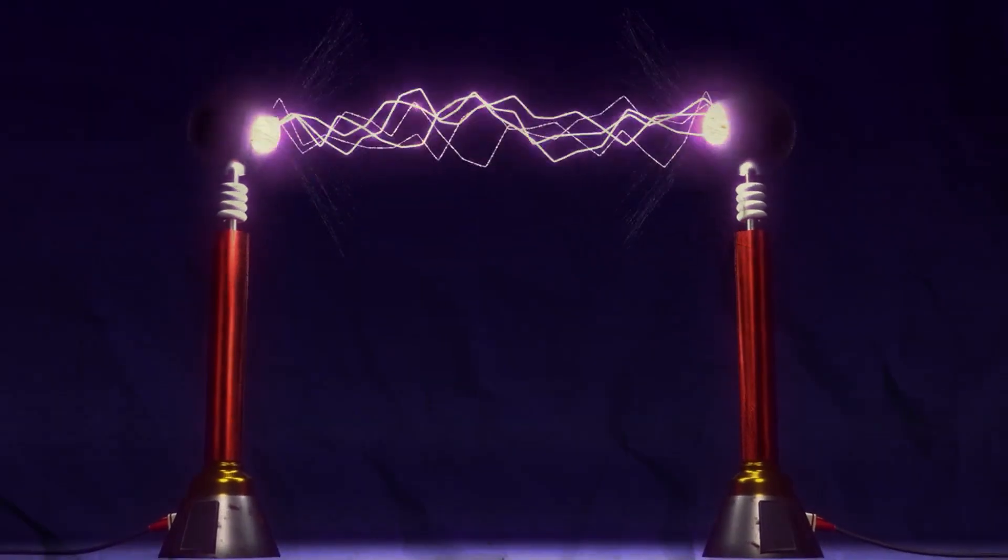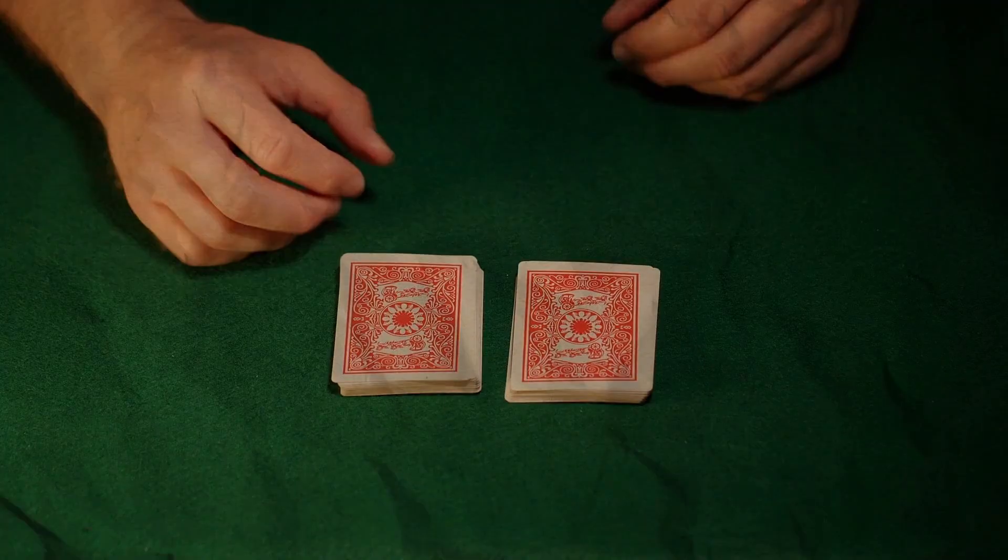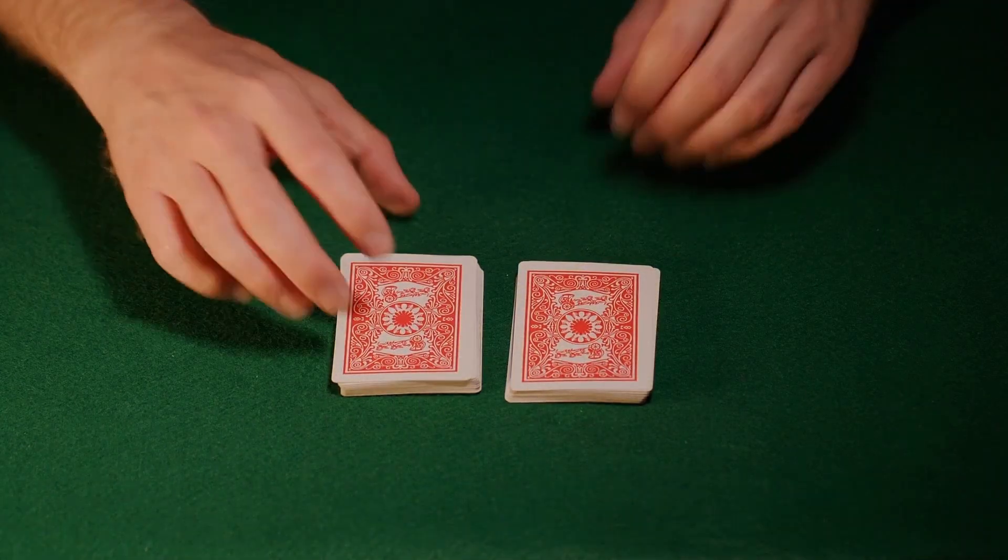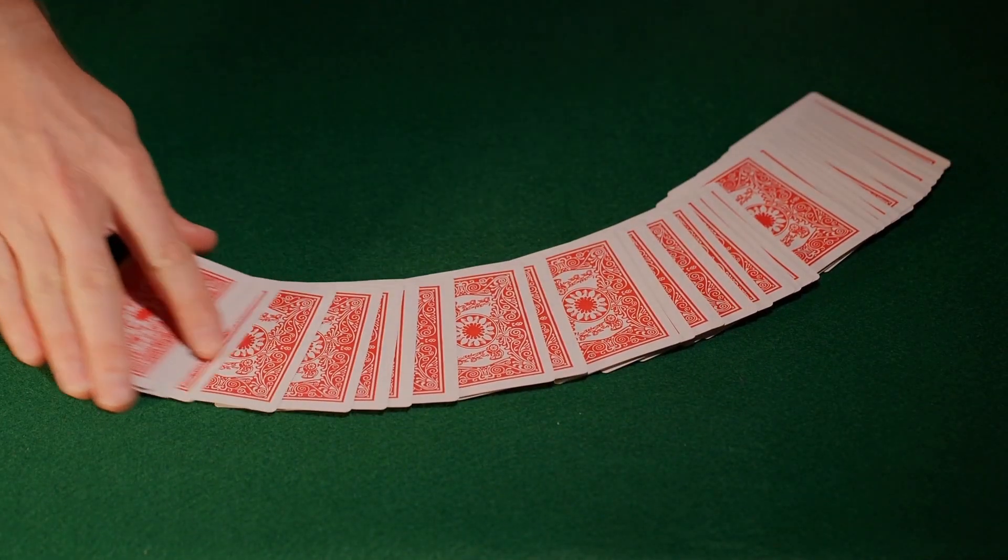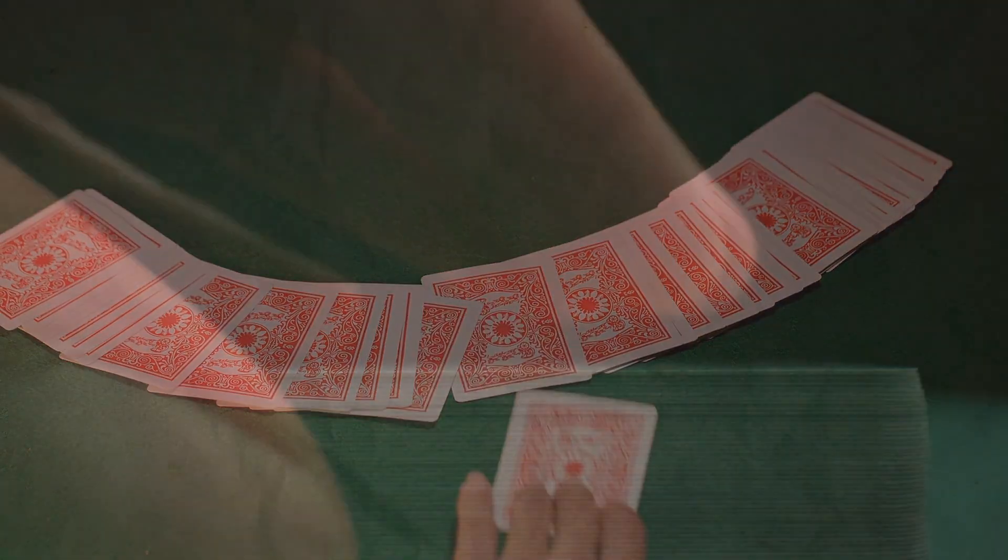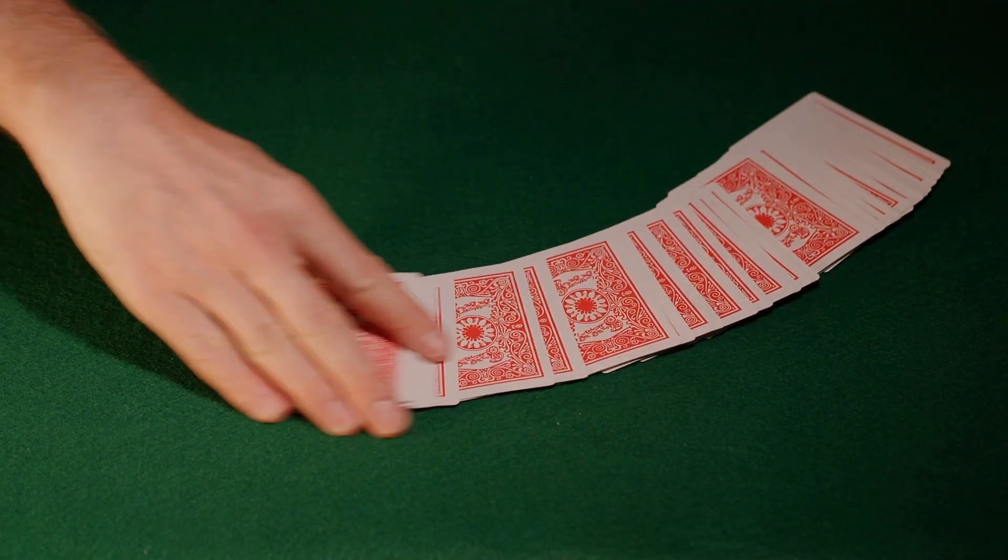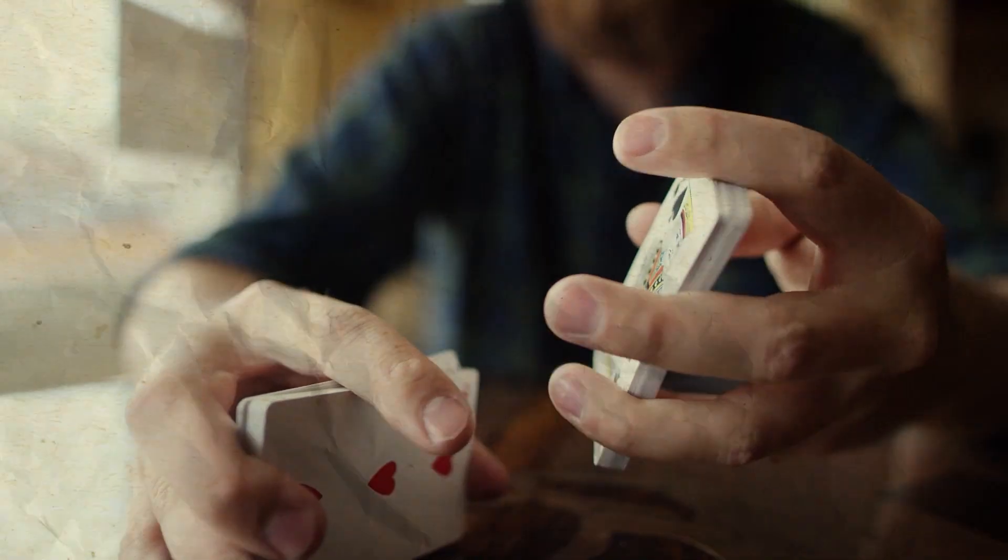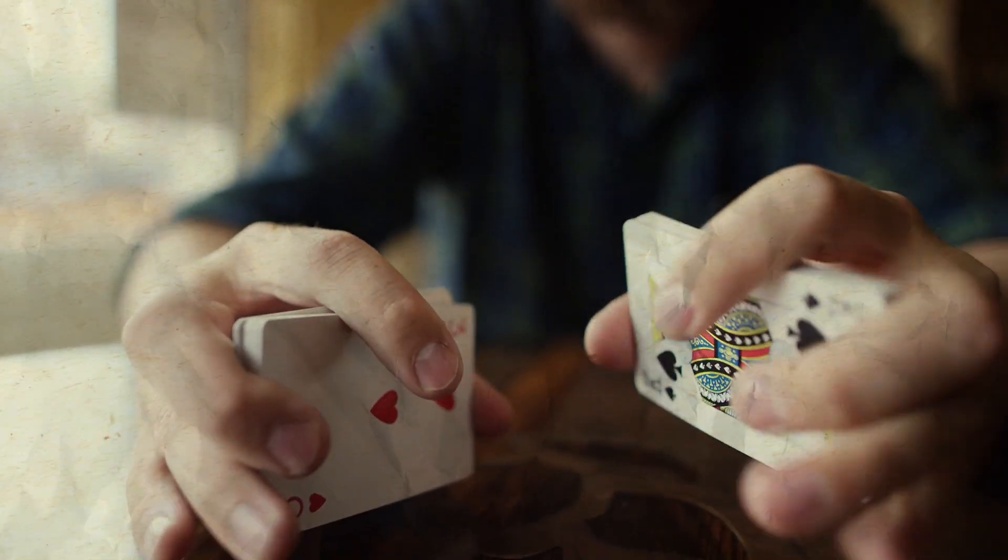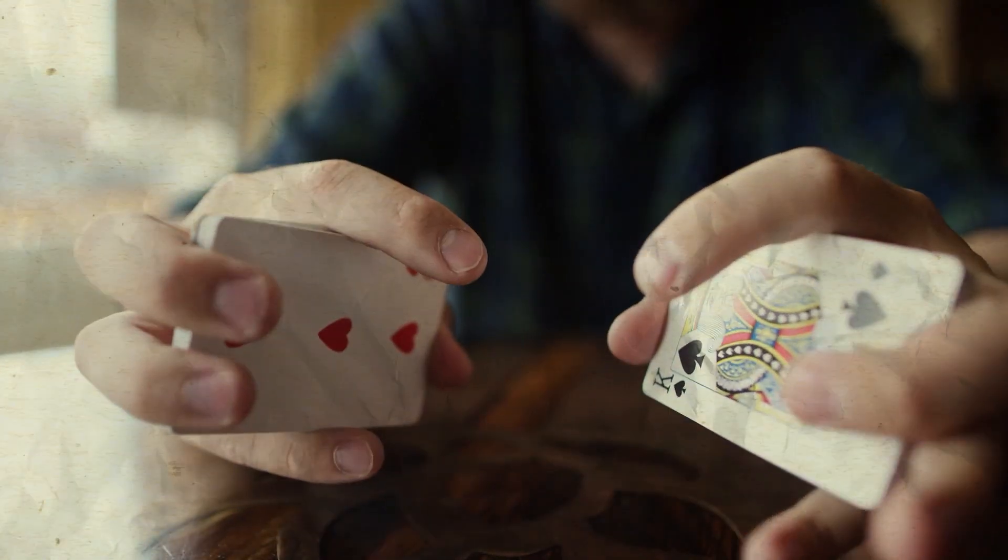Now imagine you have two identical decks of cards at your desk. You pick one, shuffle it, and then hand it to your assistant. Your assistant then takes the card to another room without looking at it. You then pick up the second deck, shuffle it, and place it on your table facing down. You then ask your assistant to randomly choose a card from the first deck without looking at it.